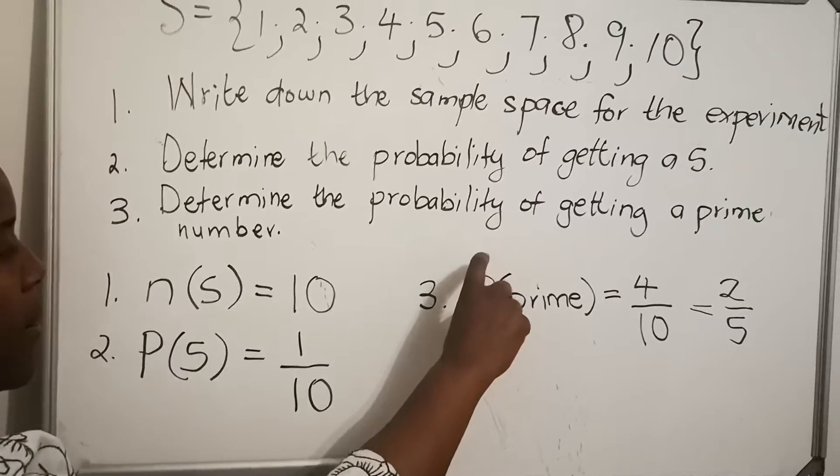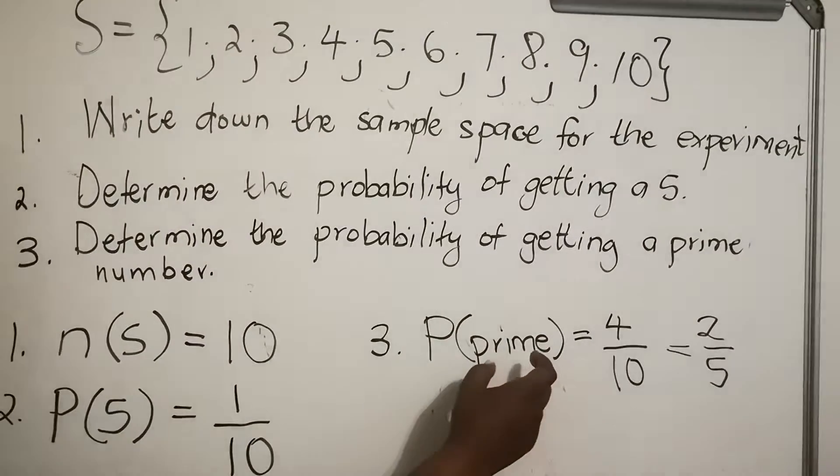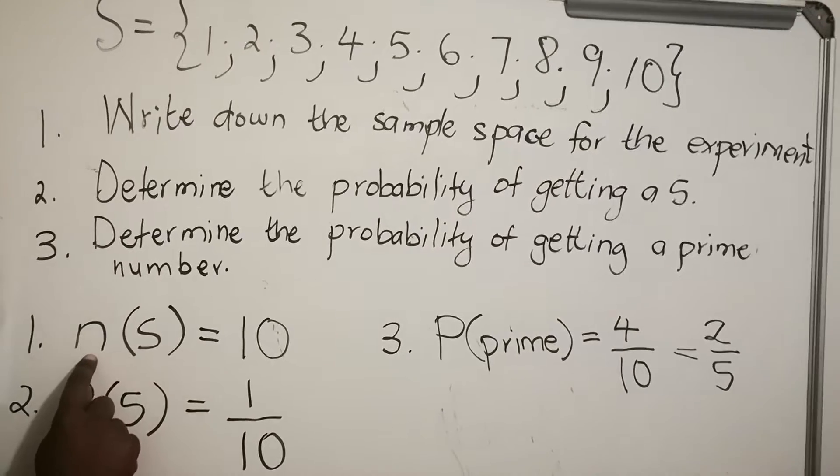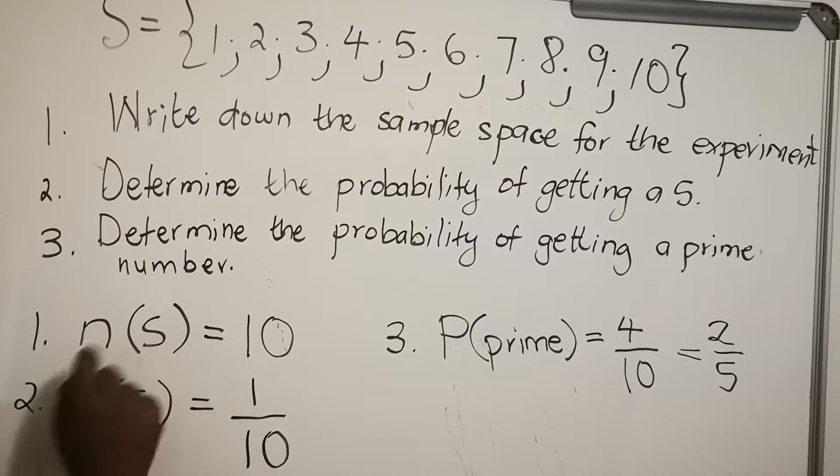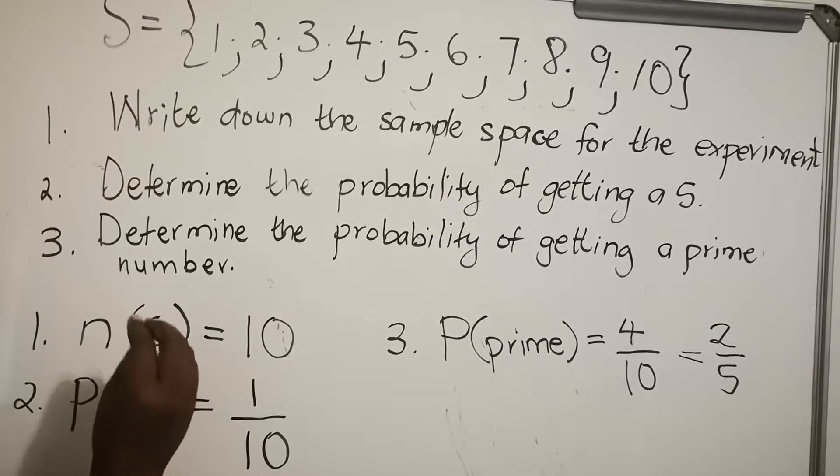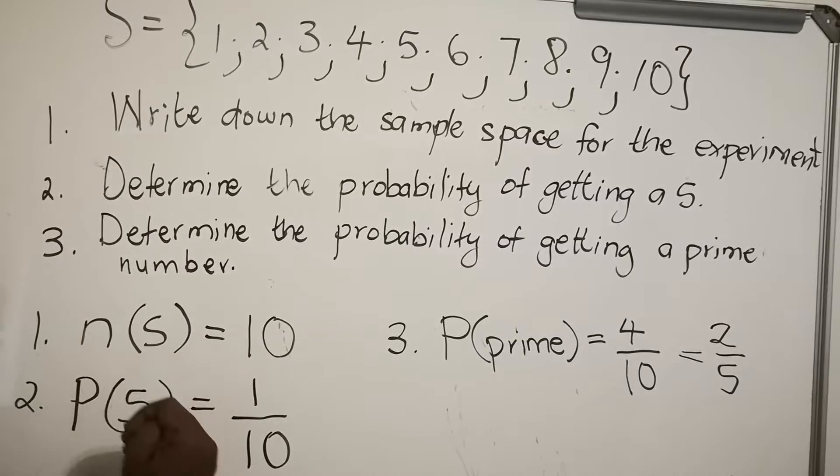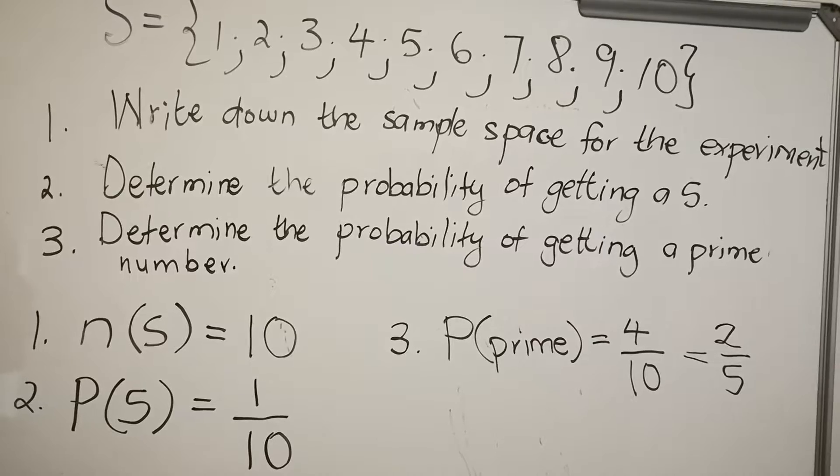Whatever event you write between the brackets. Now with question number one, n is written in small letter. It's the number of the event that you write inside the bracket. So you need to look at the question and see what did they ask you. Did they ask you the number or did they ask you the probability, and answer the correct question. This is the end of our lesson. Thank you.